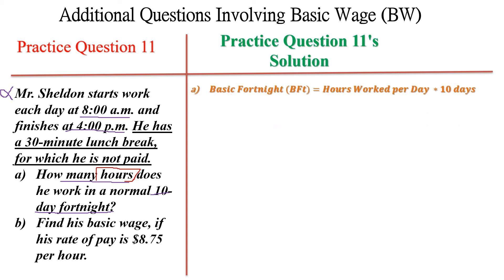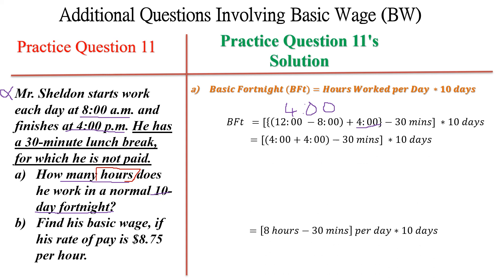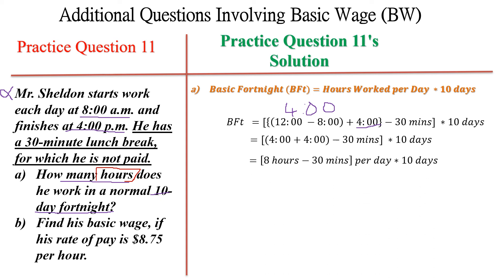To find the hours, we subtract 8 from 12 to get 4 hours in the morning, then add the 4 hours from 12 to 4 p.m., giving 8 hours total from 8 a.m. to 4 p.m. We then need to account for the 30-minute lunch break.